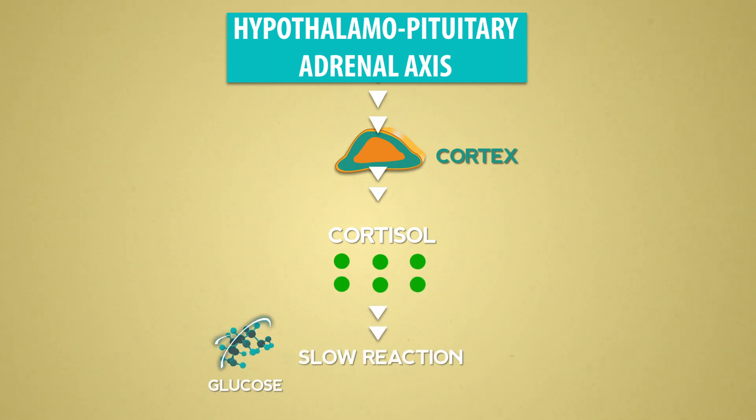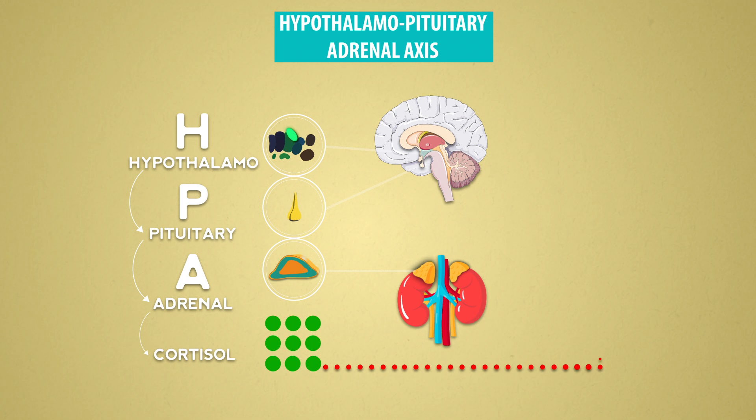Cortisol ensures the release of glucose, which is essential for the energy production needed to continue reacting to the stressor. It also has an anti-inflammatory action. Finally, cortisol regulates its own production by acting upstream in the brain.